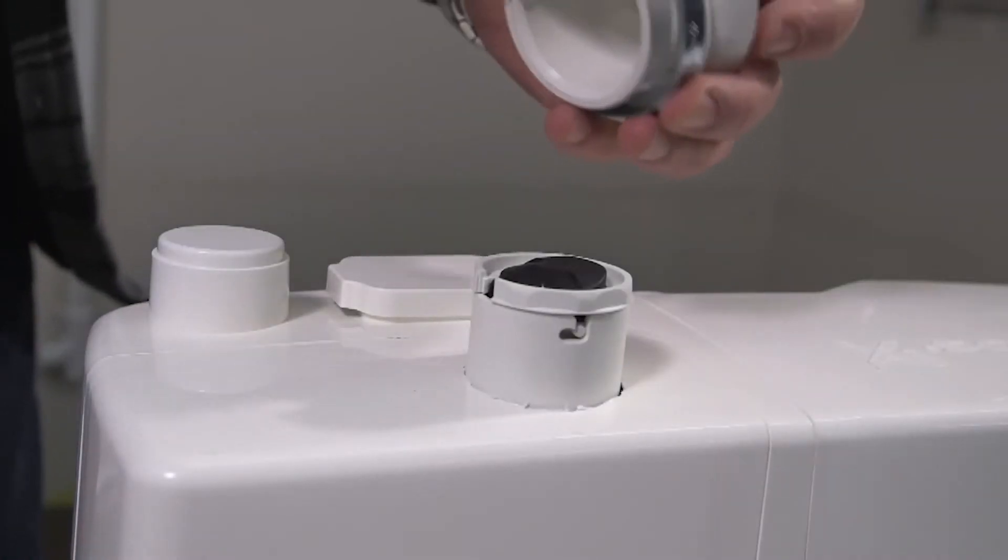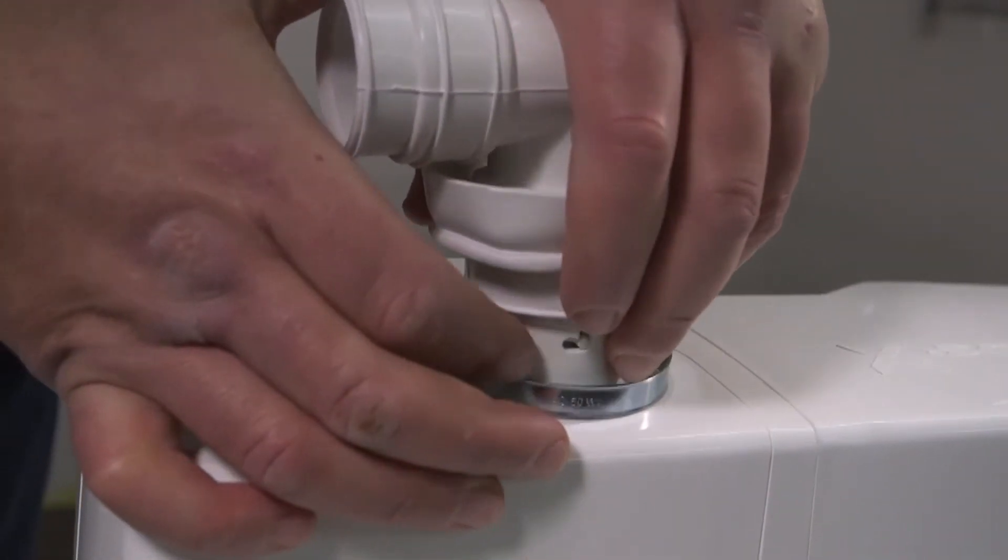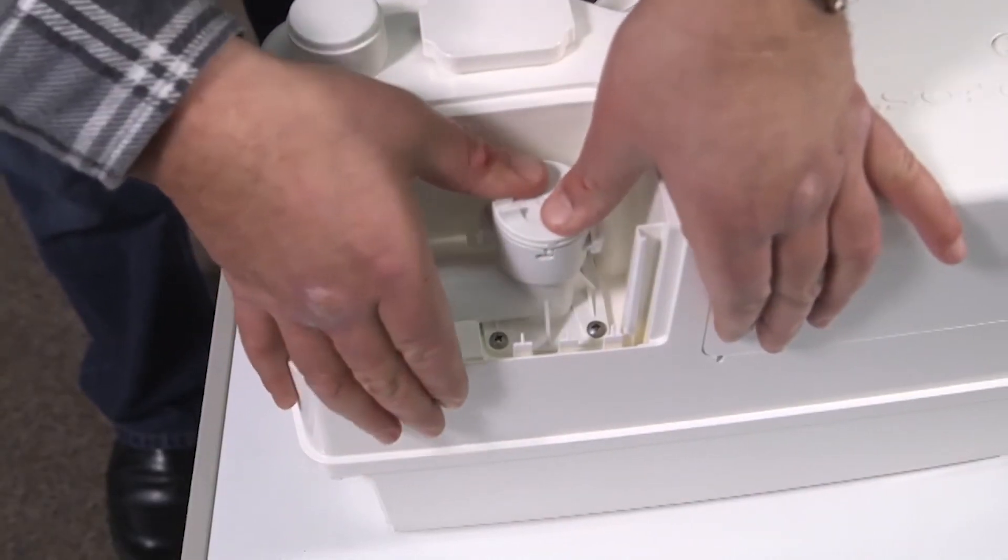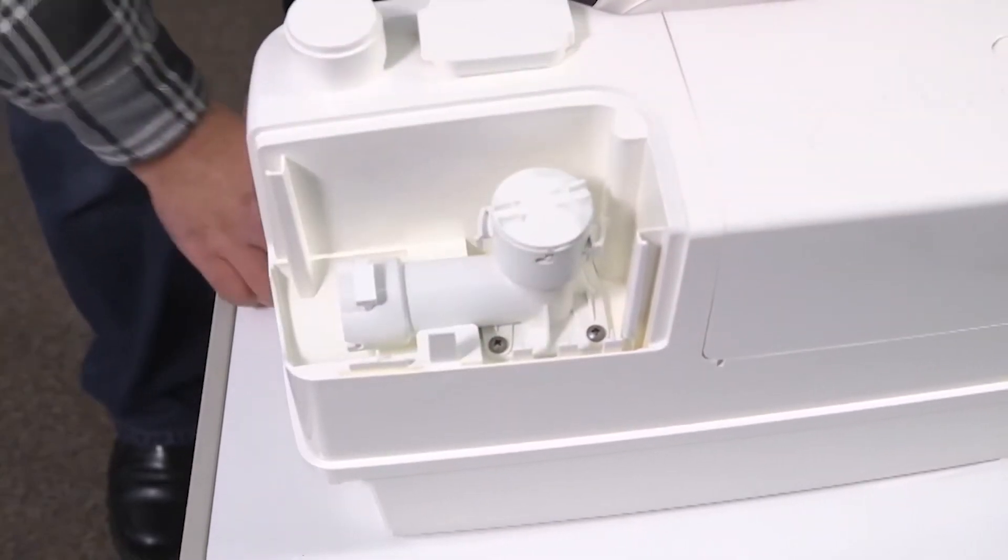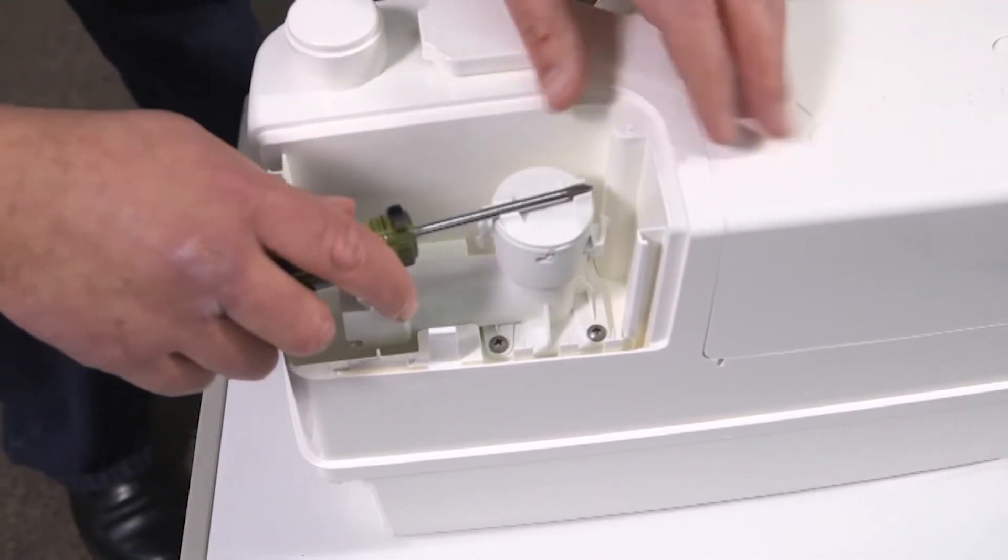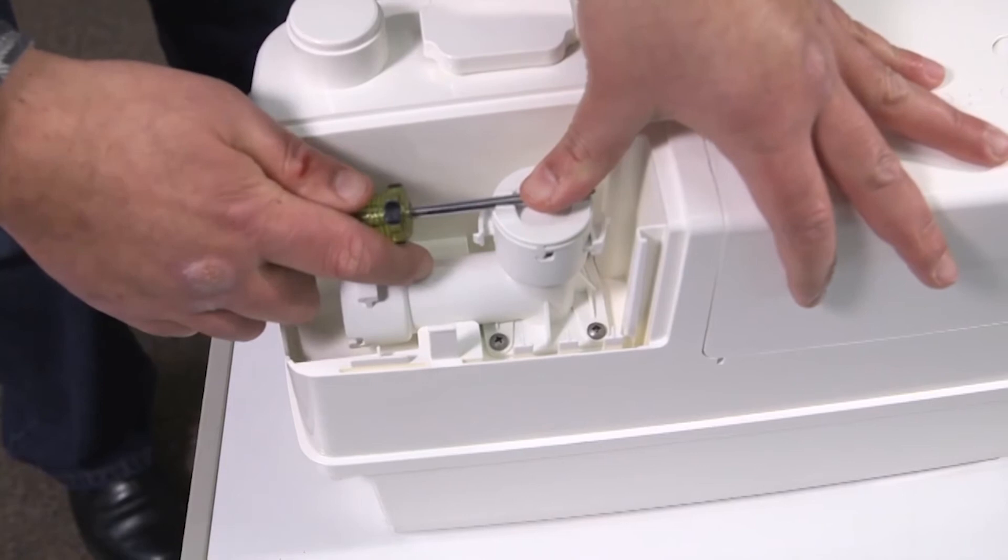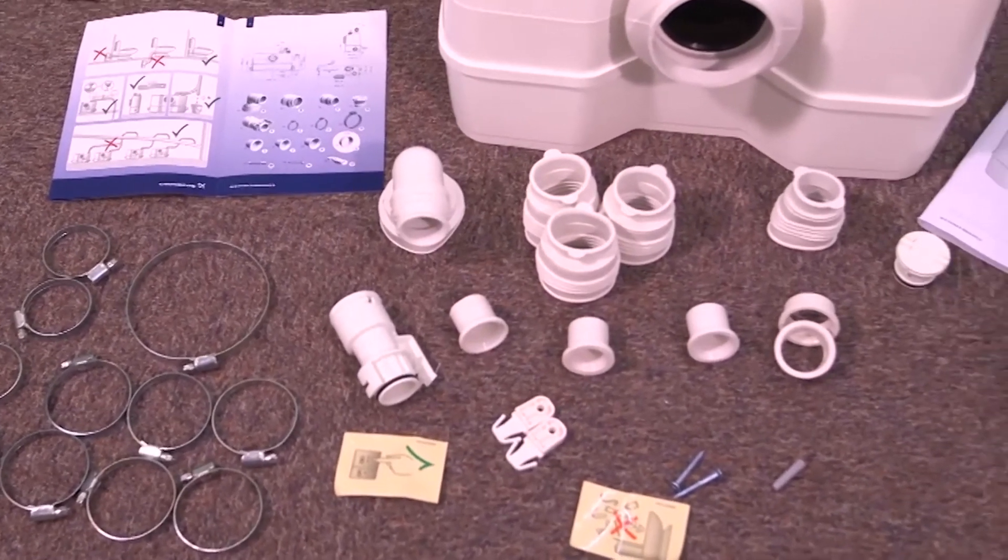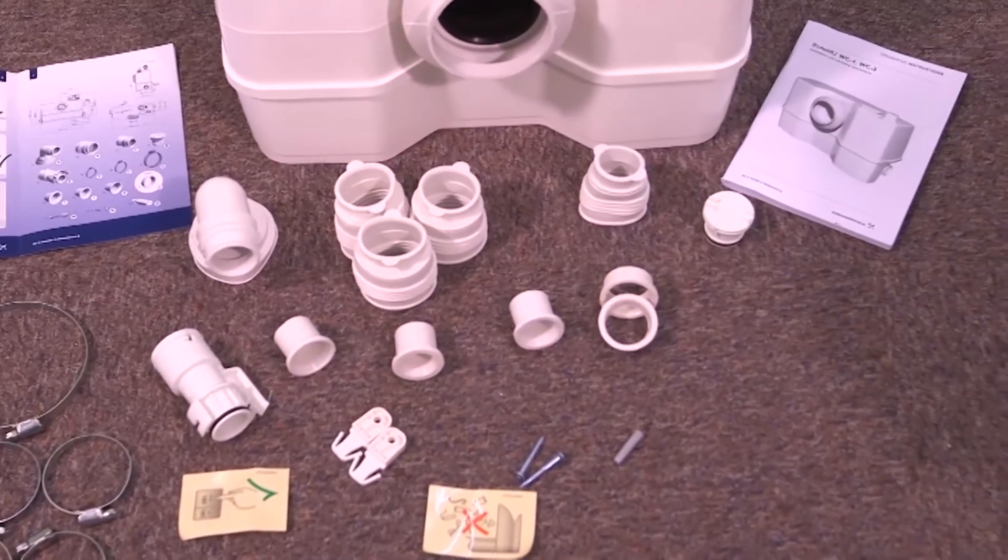During installation, be careful not to damage the unit or connecting pipes. Apply gentle force and do not use a hammer as this can easily cause damage or breakages. A helpful tip is, when installing parts with rubber seals, use a little soapy water to assist. Before installation, check the contents of the box is complete.